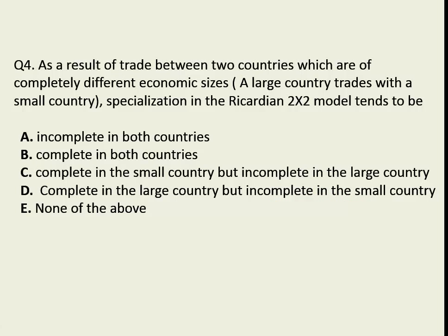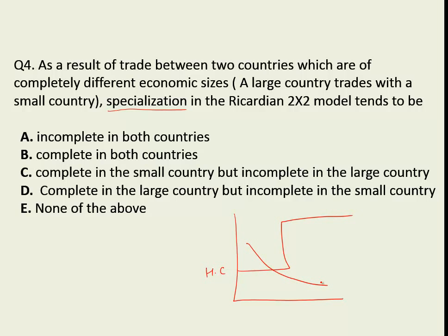This question asks if there would be any specialization by the large country. If it's a large country, it would produce both goods — there would be incomplete specialization in the large country, whereas a small country would specialize in the production of one good. For example, if home country was a large country, the demand function would intersect such that home country produces both goods and the foreign country specializes in one good. So we would have complete specialization in the small country case but incomplete in the large country case.